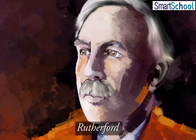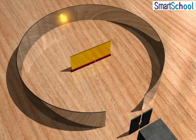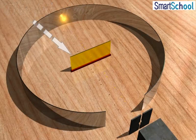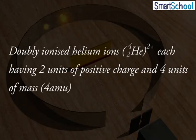In 1911, Rutherford performed an experiment in which he bombarded a thin foil of a heavy metal like gold with a beam of fast-moving alpha particles, which are doubly ionized helium ions (He2+), each having two units of positive charge and four units of mass (4amu).